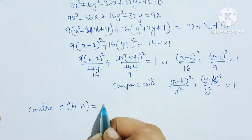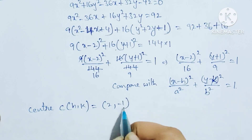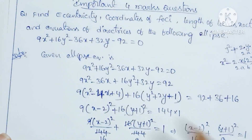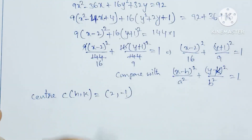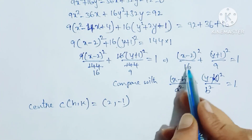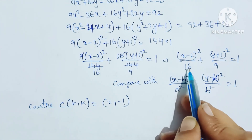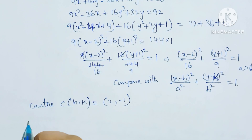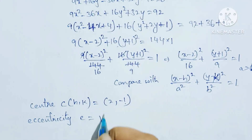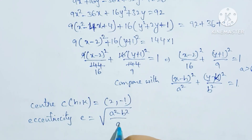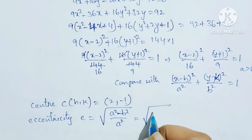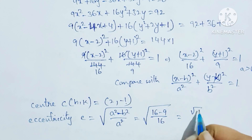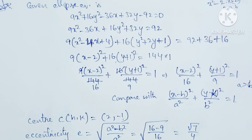Here h = 2, k = -1, so the center is (2, -1). The major axis is along x, with a² = 16 and b² = 9. The eccentricity e = √7/4.